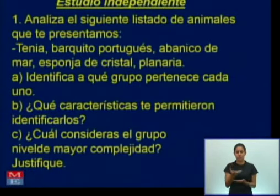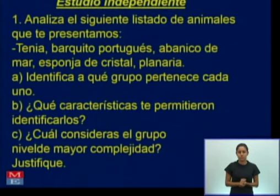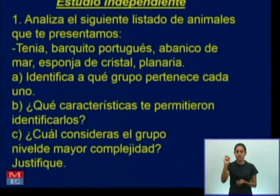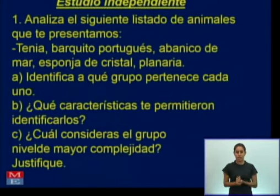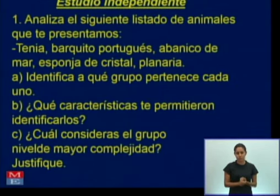El estudio independiente de la clase de hoy dice: analiza el siguiente listado de animales — la tenia, el barquito portugués, el abanico de mar, la esponja de cristal, la planaria. Inciso A: identifica a qué grupo pertenece cada uno. ¿Qué características te permitieron identificarlo? ¿Y cuál consideras el grupo de mayor nivel de complejidad?